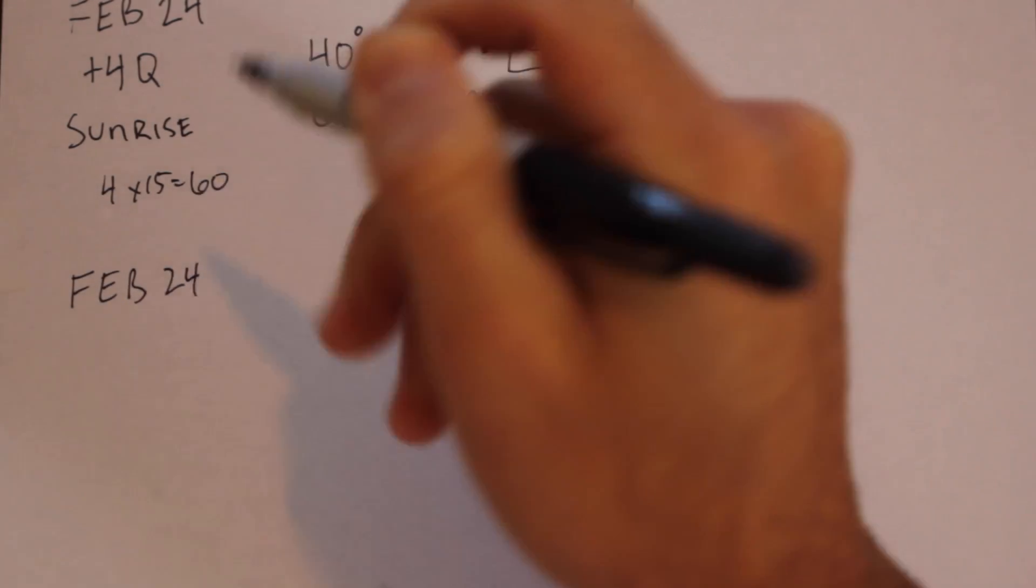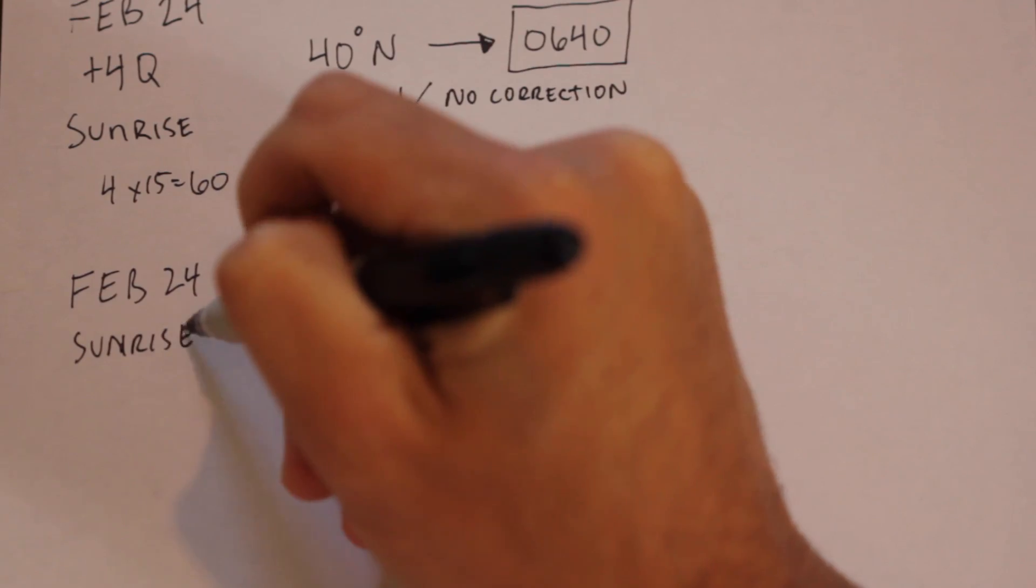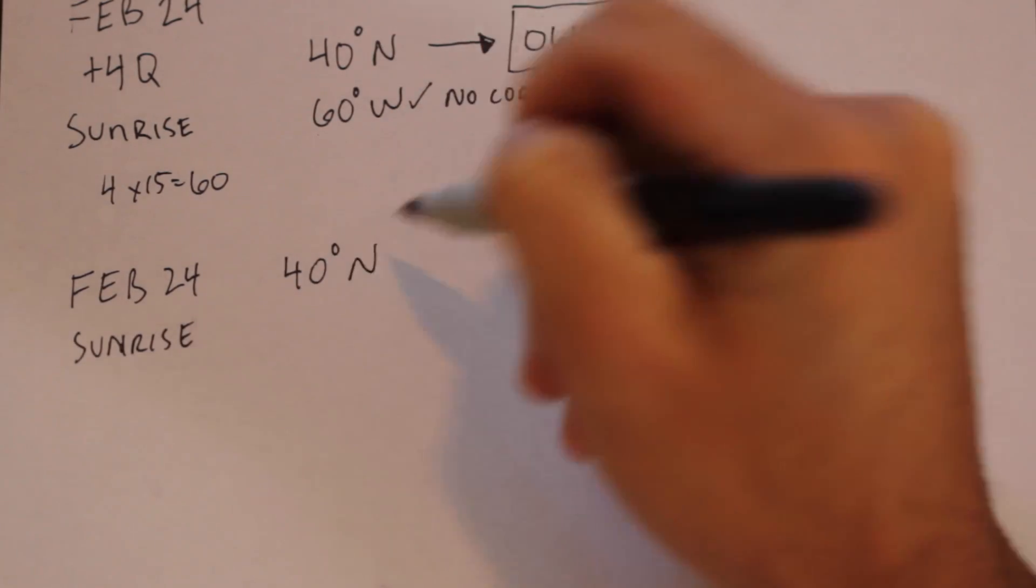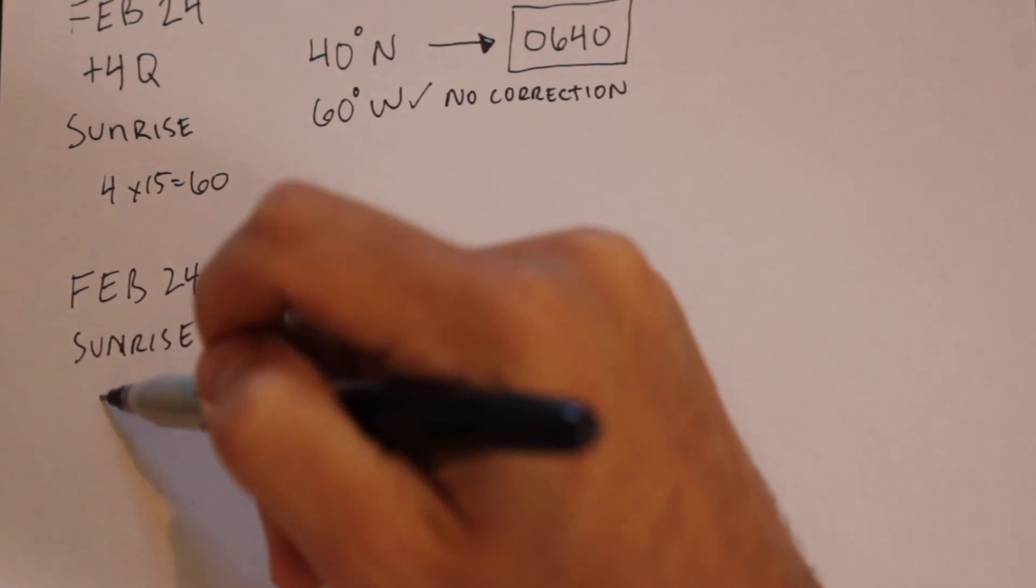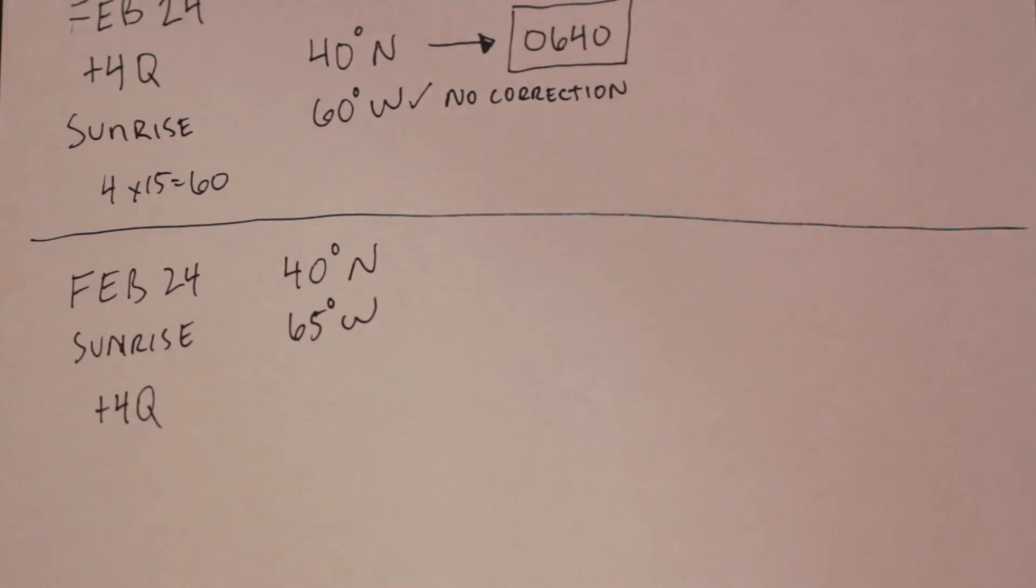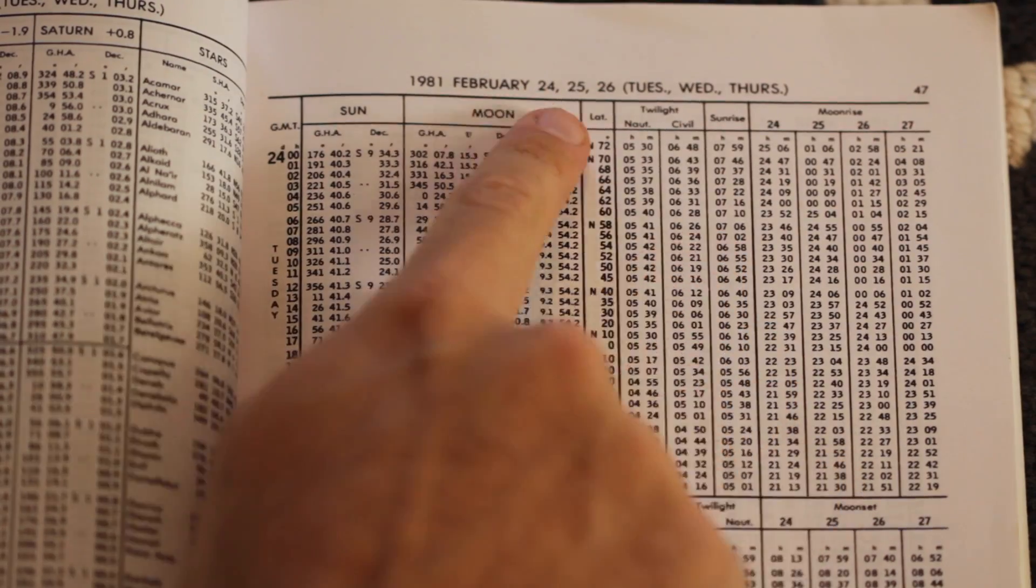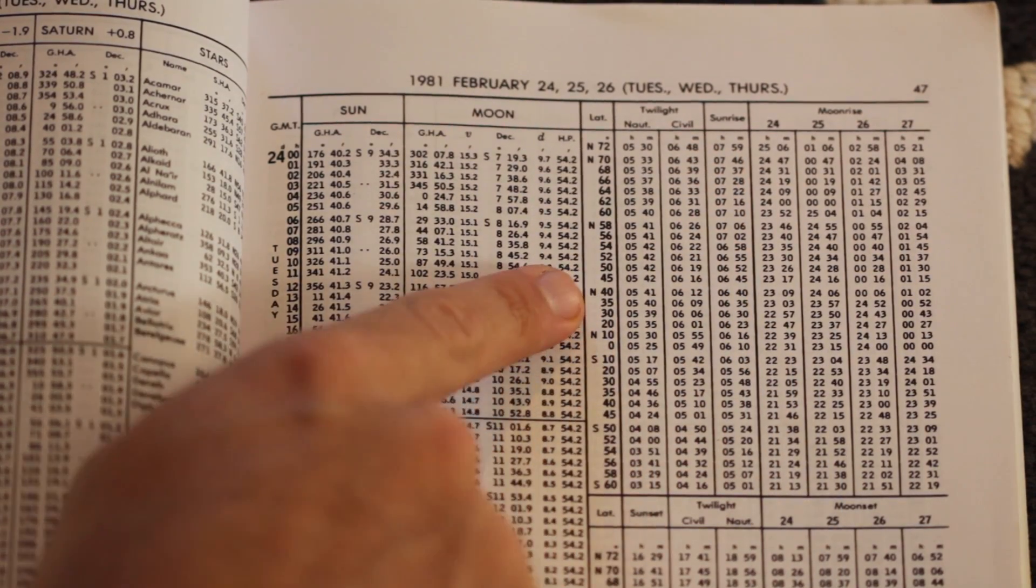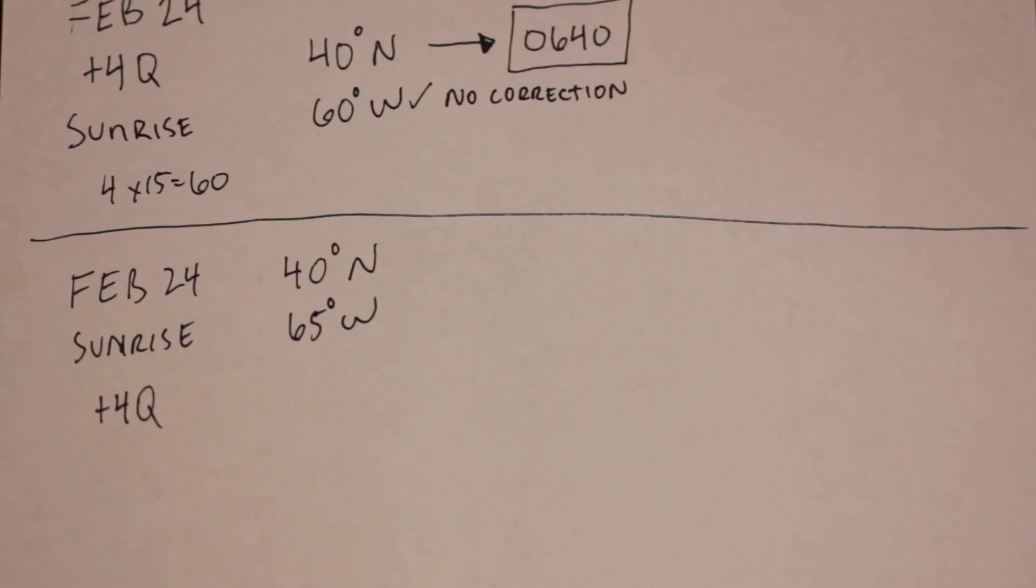Let's do another example. Same day, and still looking for sunrise. We are still observing plus 4 Quebec, but this time our position is 40 degrees north and 65 degrees west. Again, we will enter the Almanac to find the time of sunrise at our latitude, which is 40 degrees north, and that corresponds to 0640.